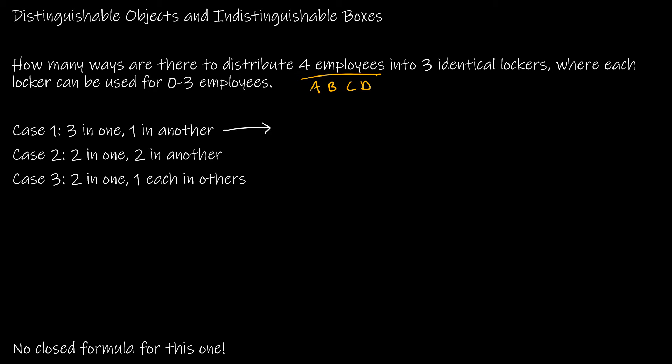Case one: choose three of the four employees for one locker, leaving one for another — that's C(4,3). Case two: two employees in one locker and two in another — that's C(4,2) times C(2,2). Case three: two employees in one locker and one in each of the other two — that's C(4,2).